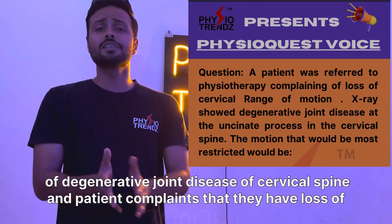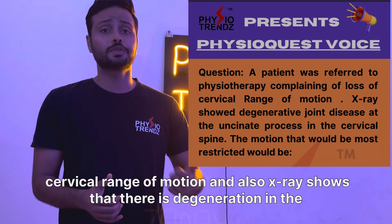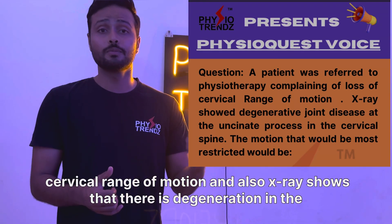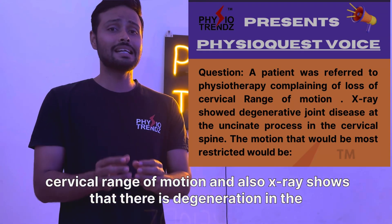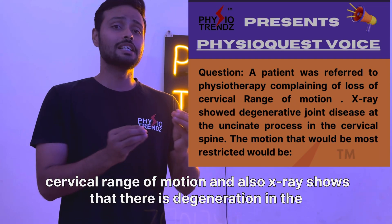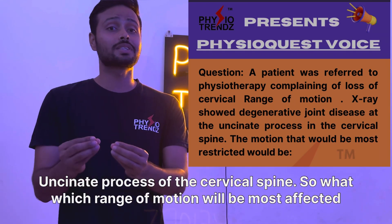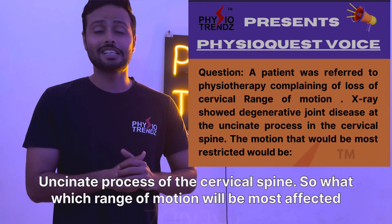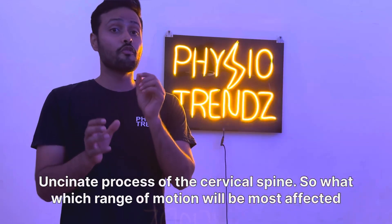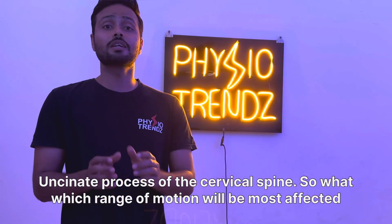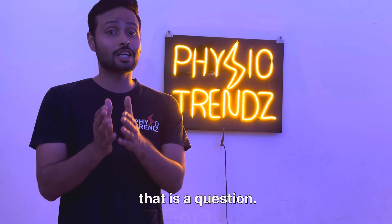The patient complains of loss of cervical range of motion, and X-ray shows degeneration in the uncinate process of the cervical spine. So which range of motion will be most affected? That is the question.